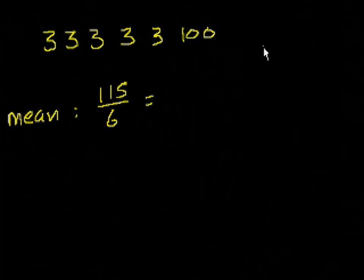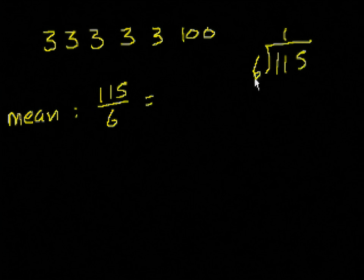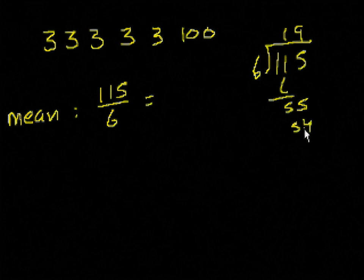So that's equal to how many times does 6 go into 115? 6, 115. See, 6 goes into it one time. 1 times 6 is 6. 55 goes into it 9 times. 9 times 6 is 54. So it's equal to 19 and 1 sixth. Fair enough. I just added all the numbers and divided by how many there are.